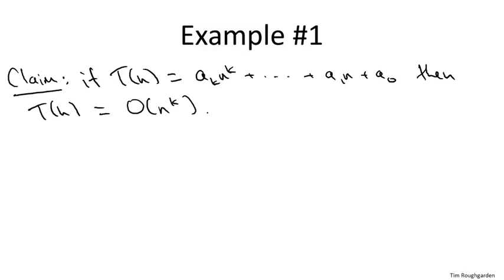This claim is a mathematical statement, something we'll be able to prove. What this claim is saying is that big O notation really does suppress constant factors and lower order terms. If you have a polynomial, all you have to worry about is what is the highest power in that polynomial, and that dominates its growth as n goes to infinity.